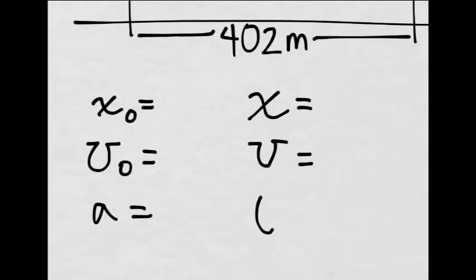The car starts at 0, oops, wrong tool. The initial starting place is 0 meters. The initial velocity is nothing because it's from a standstill. The acceleration is, that's what we're looking for. The final x is 402 meters.